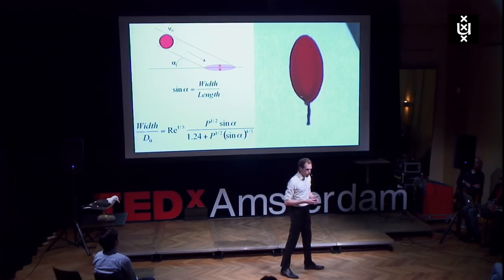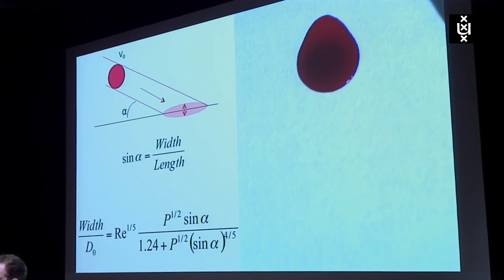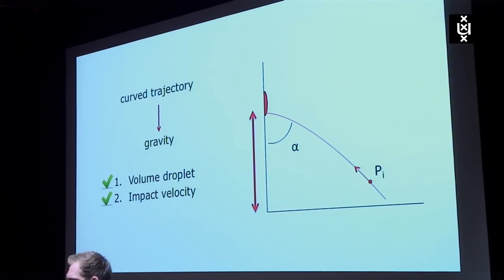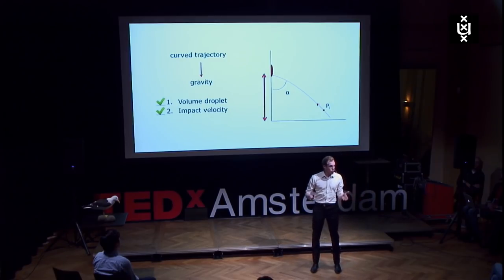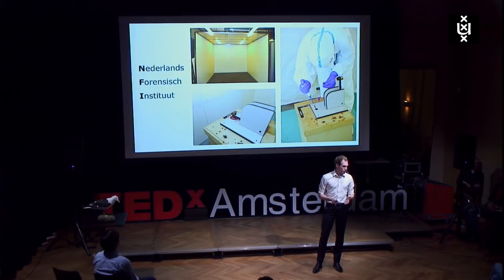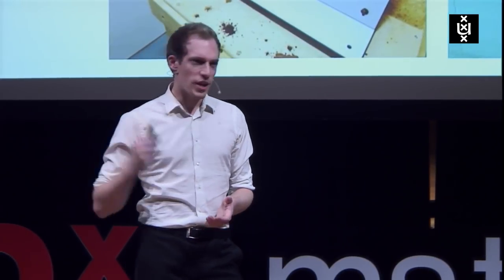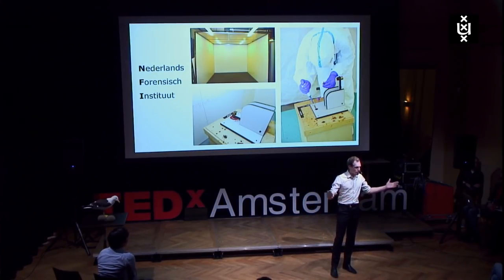Now, this equation looks complicated — it actually is complicated — but don't worry, we just have to fill it in and say to a computer, okay, give me back my velocity. And we are able to. So yes, we can determine the impact velocity. Of course, now you want to see — okay, if you can determine the impact velocity, can you actually be much better in determining where the blood came from? Can you draw these curved lines? Well, for that, we went to the Netherlands Forensic Institute. They've got these big cubicles over there, and they allowed me to go in and play a little bit with blood, splash it around, make these impact patterns. We took these hammers, put two to three milliliters of blood down — for that, I usually use my own blood. We pull the hammer back, the hammer is attached to a spring, so we release it — bam — impact pattern on the wall.